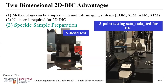Some advantages of 2D DIC: the methodology can be coupled with pretty much any imaging system — a light optical microscope, an SEM, an AFM, or an STM. For capturing in-plane deformation, no laser source is required. When looking at a larger field of view, it's relatively simple to apply a speckle pattern using paint, airbrushing, or toner. This becomes more complicated when looking at a smaller field of view and trying to capture microscopic deformation.